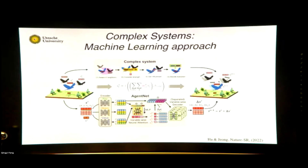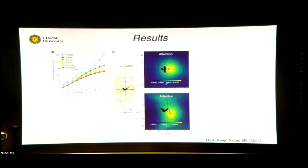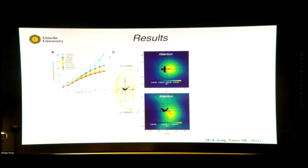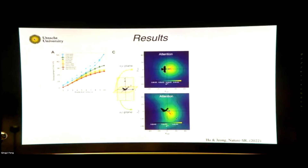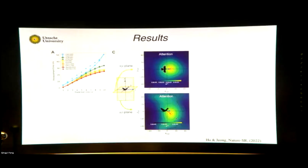AgentNet is doing much better than any of the other techniques you can use to simulate this type of flocking. And interestingly, from that machine they can actually look at what is the attention of the birds — where are they looking in the interaction. You can see they're looking forward but also downwards. This comes out of the data from the machine. The biologists claim that this is indeed their attention span when interacting with other birds. The idea is that machines can actually extract a lot of information on the interactions. This is pushing complex systems forward.